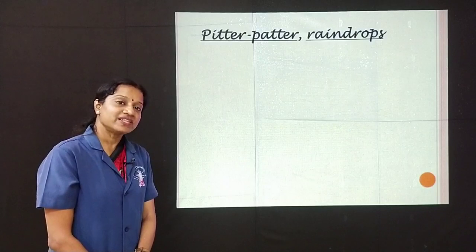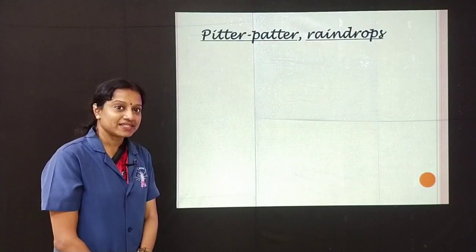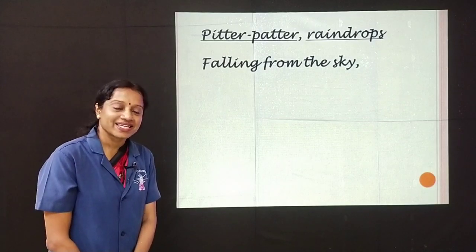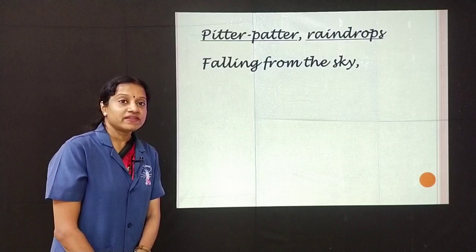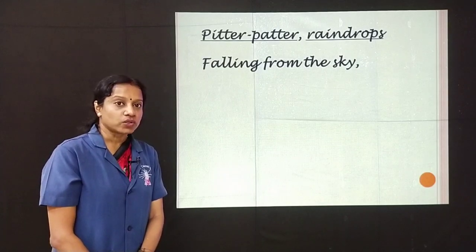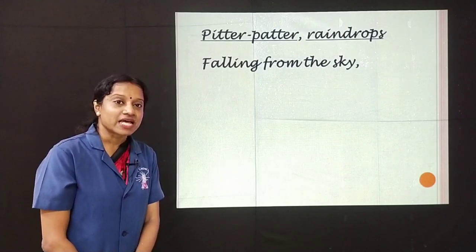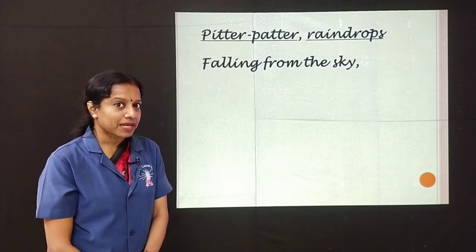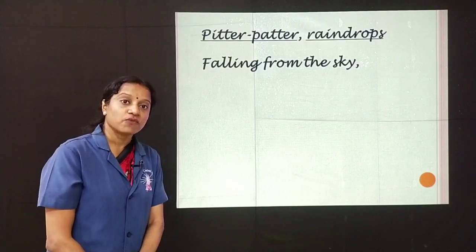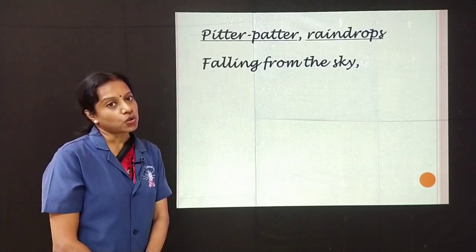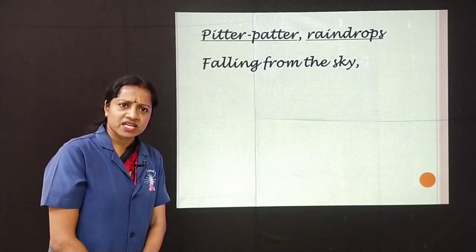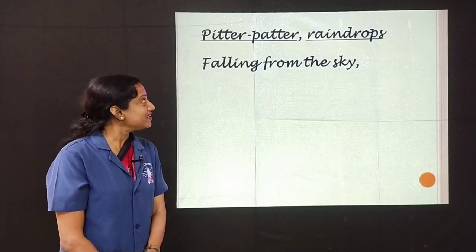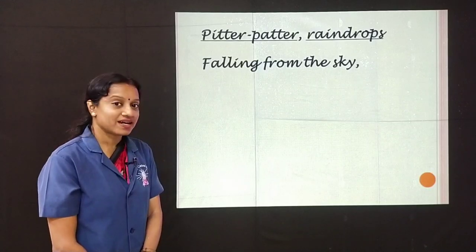Let us go to the first stanza. Pitter patter, raindrops falling from the sky. What is pitter patter, children? When the raindrops fall on the ground, they make the sound pitter patter. You must have heard the pitter patter sound when the raindrops fall on the windowsill or on the window pane.